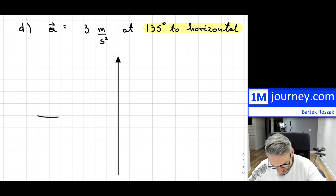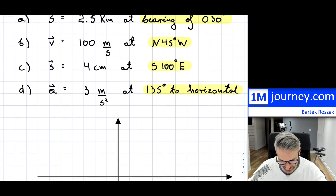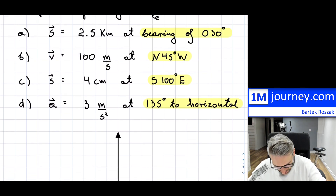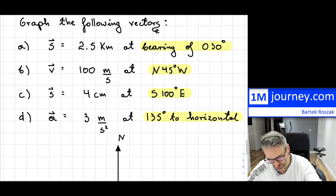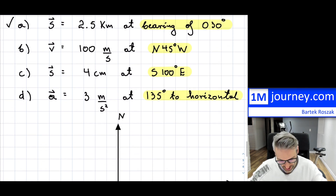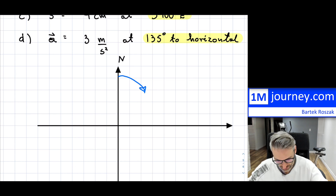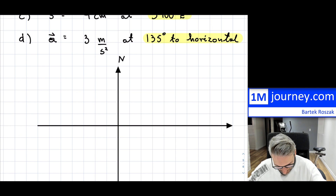So here is my X and Y axes. The first one — this is going to be my north direction. So I'm going to do this one first: 2.5 kilometers at a bearing of 30 degrees. This means we're going to be shifting in this direction, going 30 degrees from the north — so something within this quadrant.